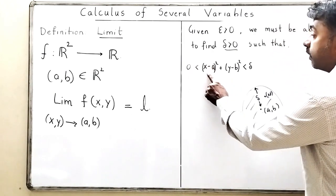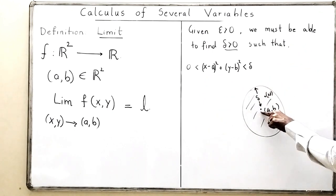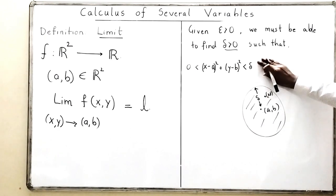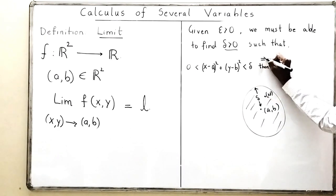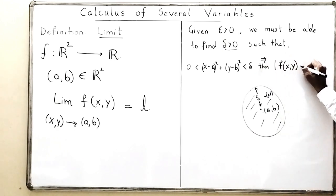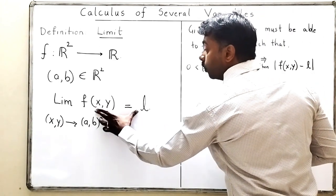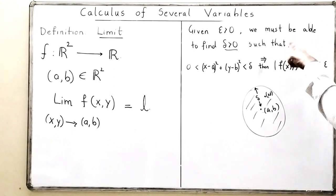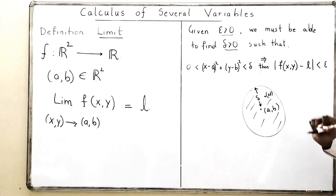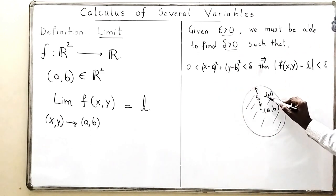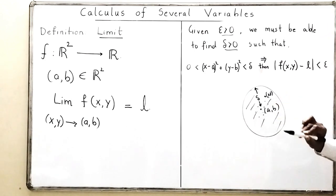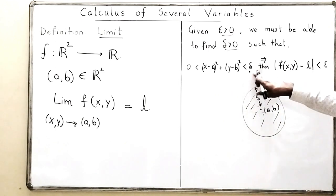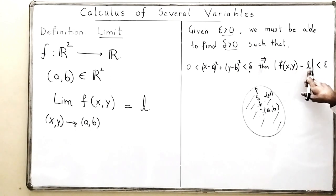I don't want x and y to directly reach the point (a, b), so I put a strict positivity condition. In that case, f(x, y) and L must also be very close to each other — meaning the distance |f(x, y) − L| should be less than epsilon. So if (x, y) is very close to (a, b) with distance at most delta, then f(x, y) and L should also be very close.